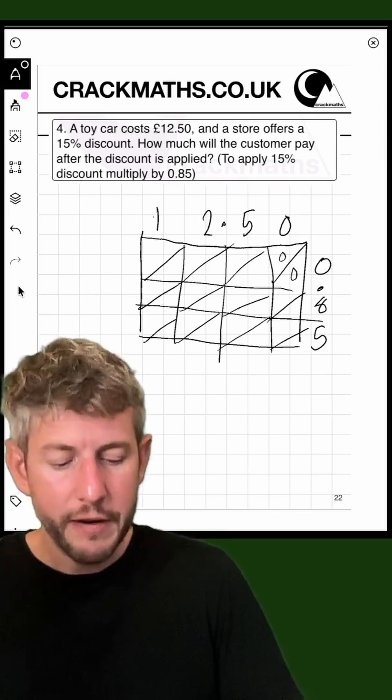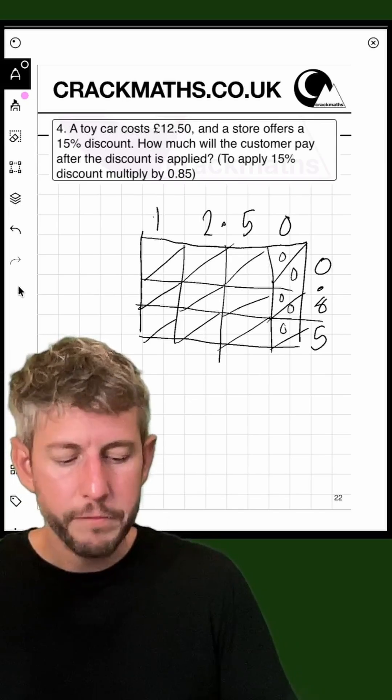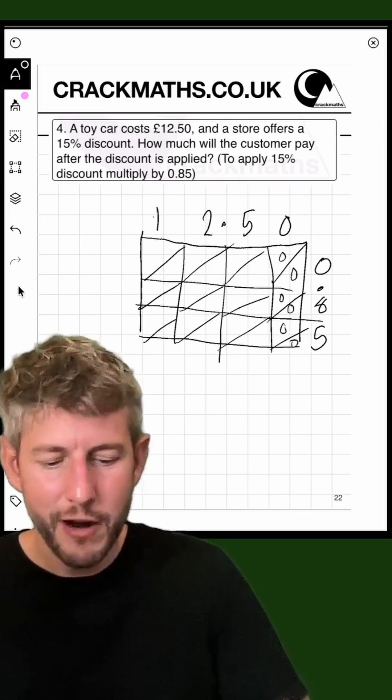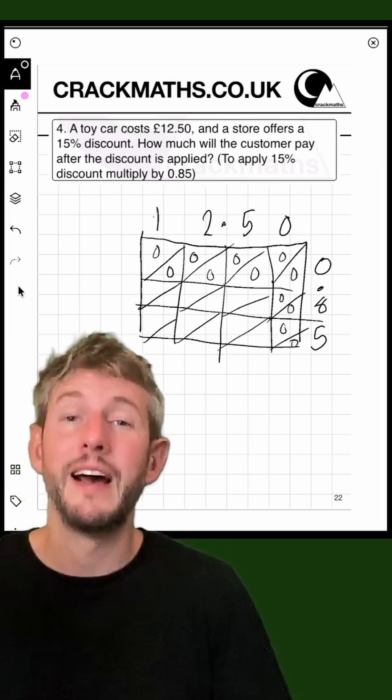So 0 times 0 is 0. In fact, everything times 0 is 0. So this column will be filled with 0s and this row will be filled with 0s as well.